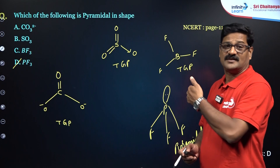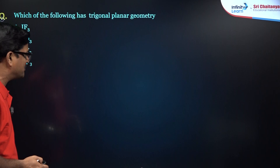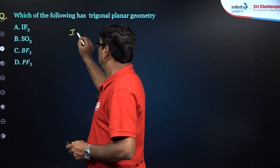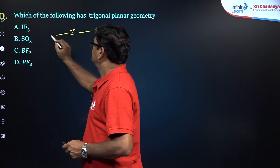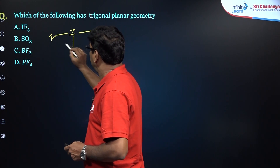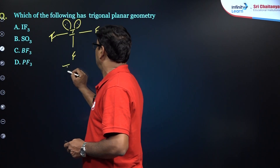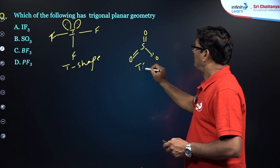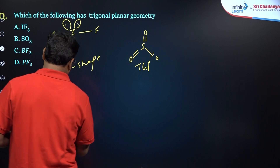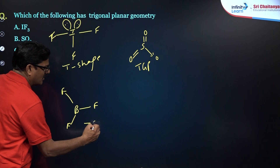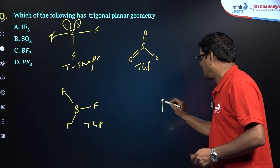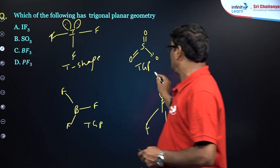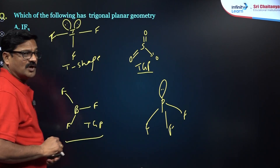Every option must be analyzed carefully for a good NEET score. Next question: which of the following has trigonal planar geometry? IF3 has two lone pairs and is T-shaped. SO3 is trigonal planar. BF3 is also trigonal planar. PF3 is pyramidal. So SO3 and BF3 are both correct answers for trigonal planar geometry, though only one option should be selected.